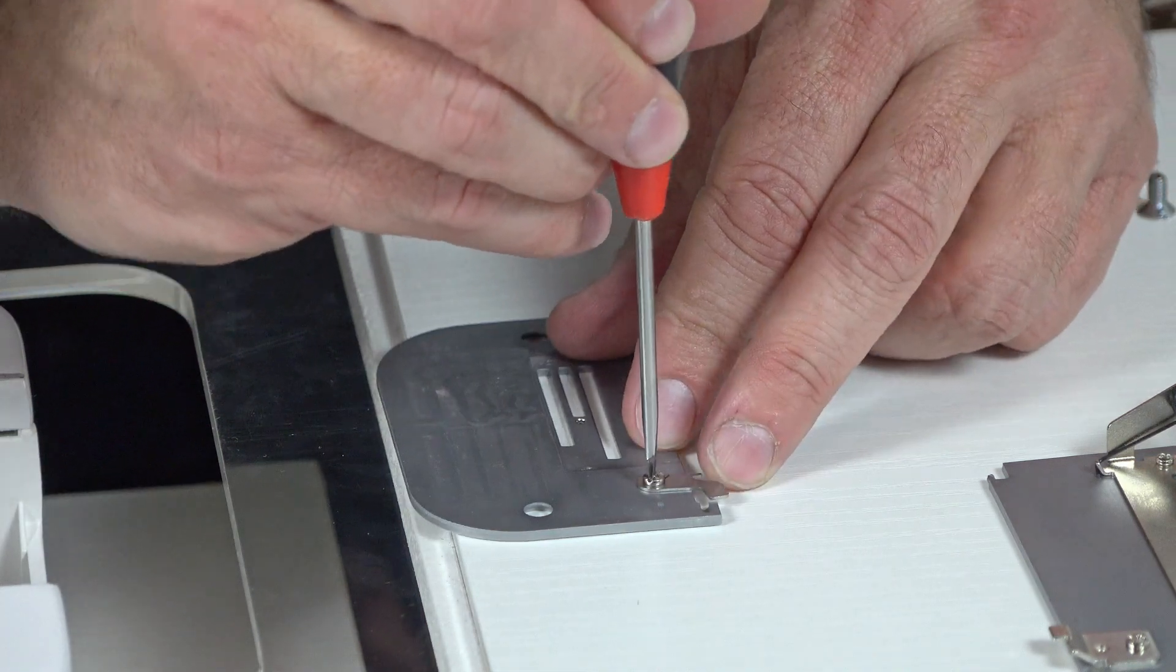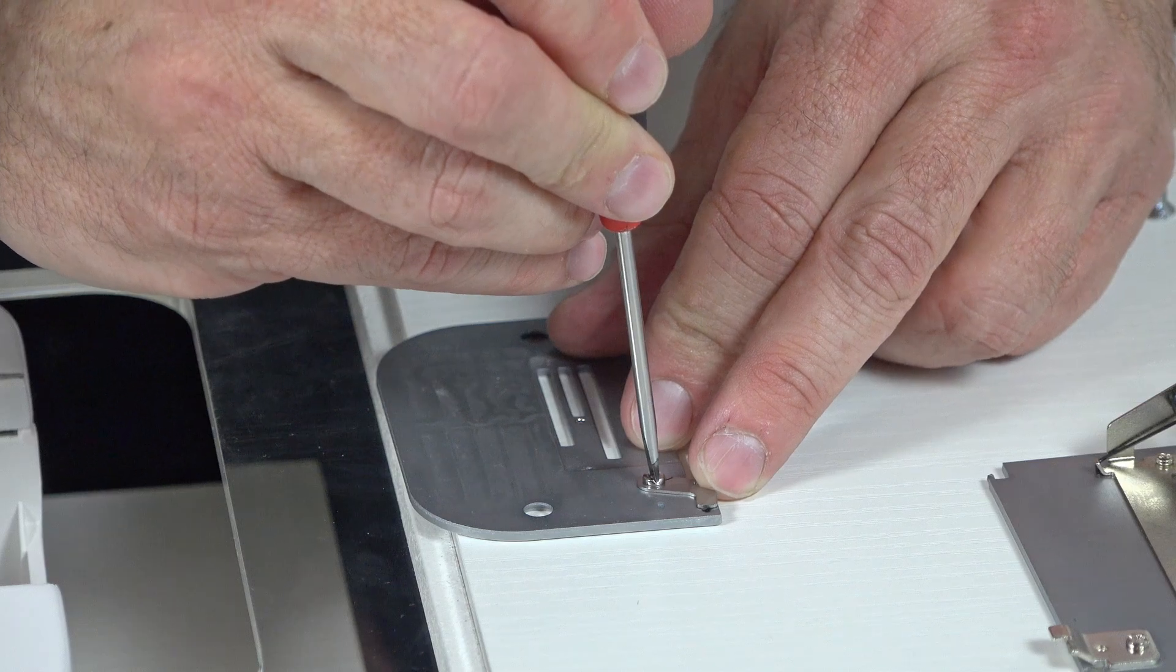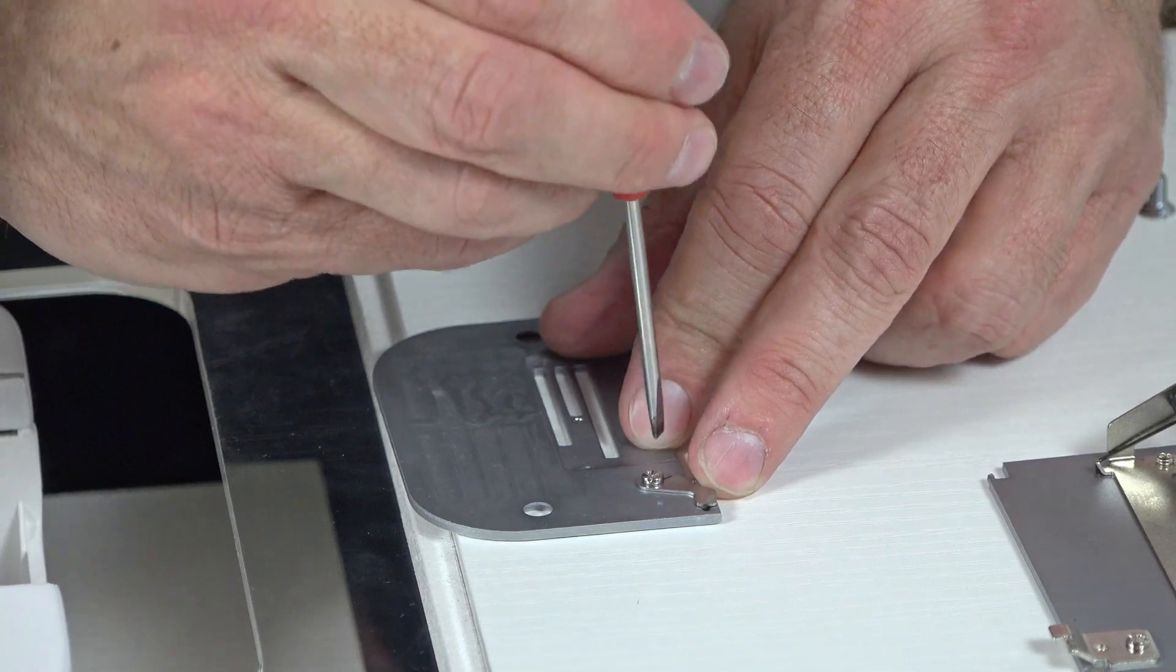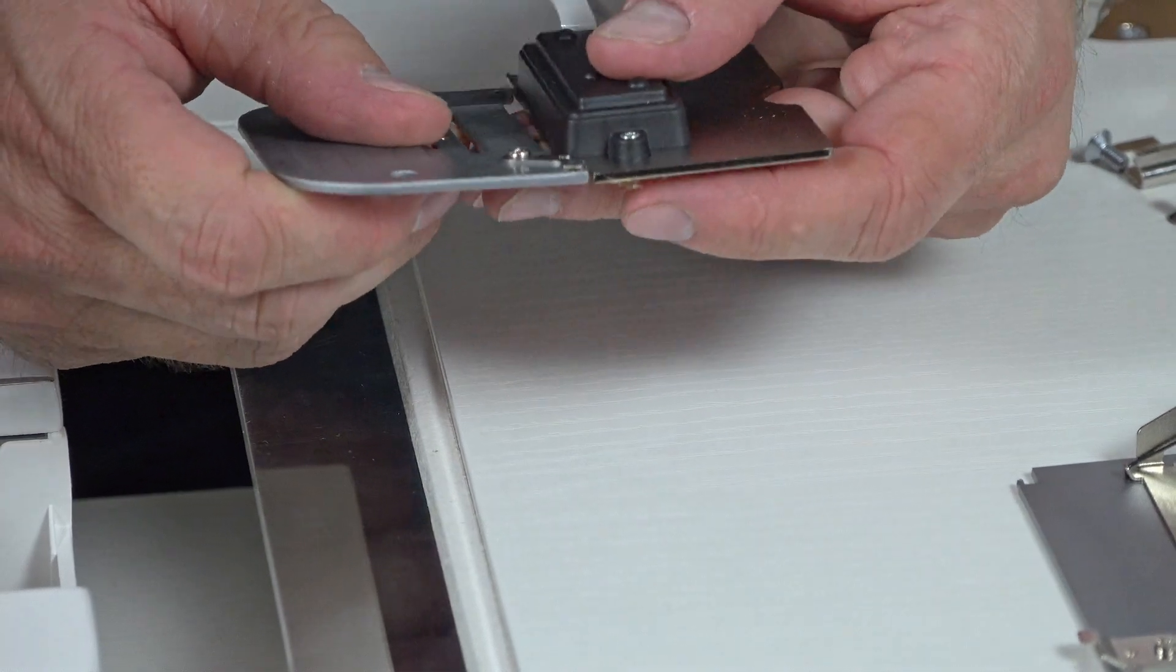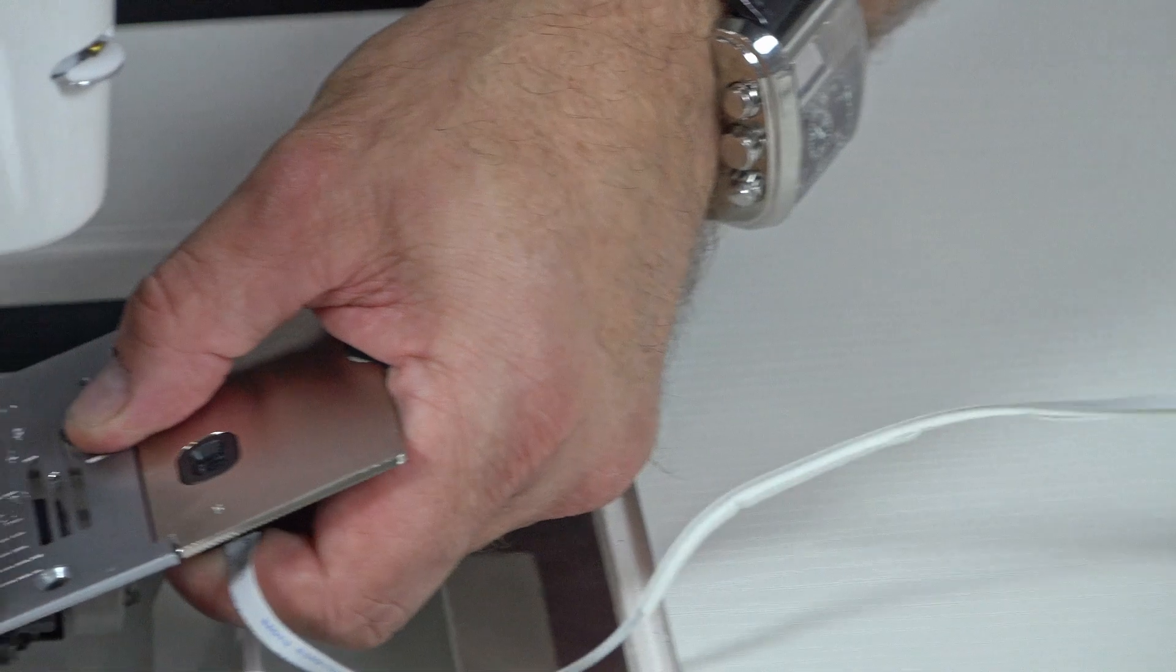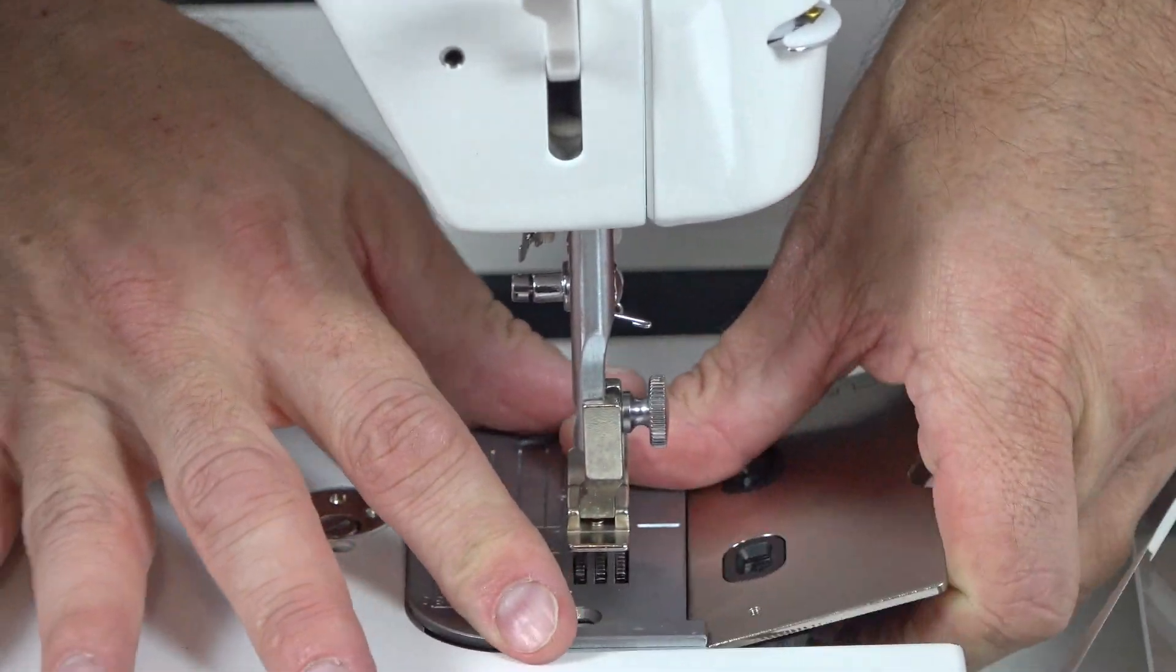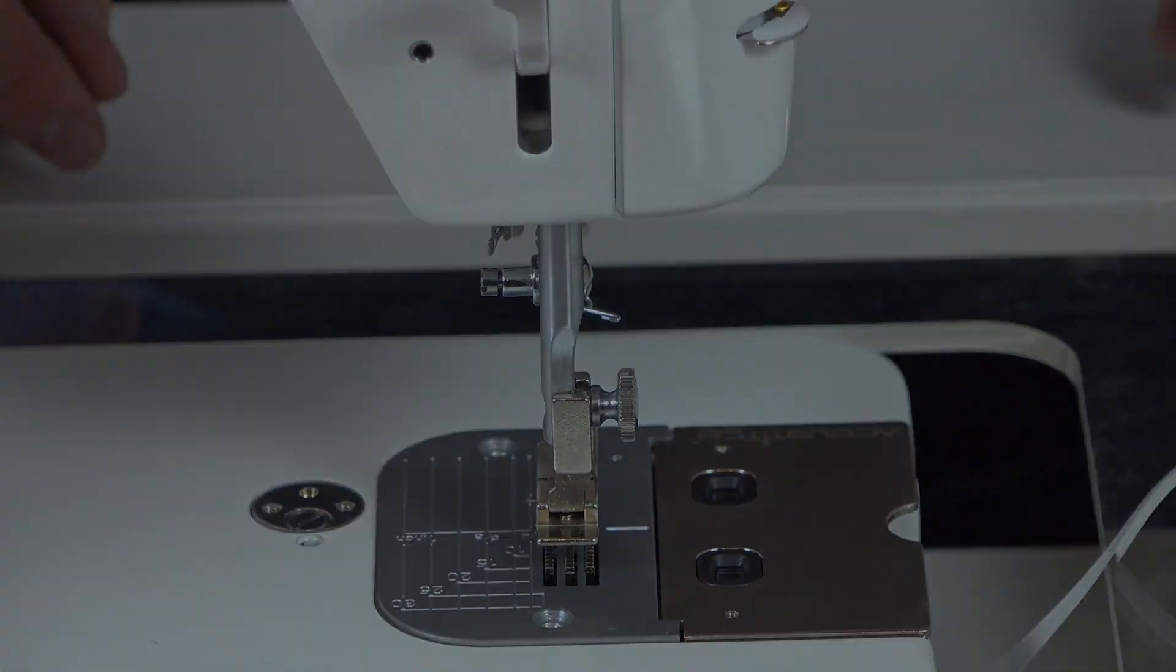Slide the spring plate over so that it's covering the notch in the needle plate. Take your AccuStitch plate and it slides under that plate. Then reinstall your needle plate on the machine.